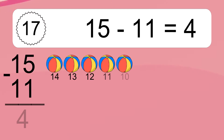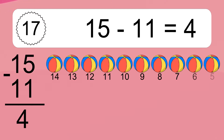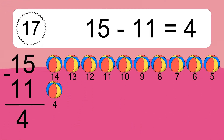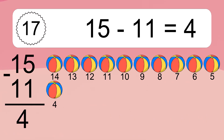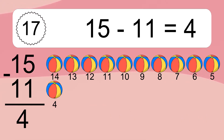15 minus 11 equals what? 15 minus 11 equals 4. Let's count it: 14, 13, 12, 11, 10, 9, 8, 7, 6, 5, 4.